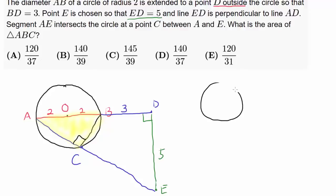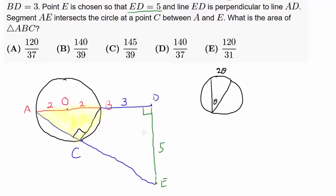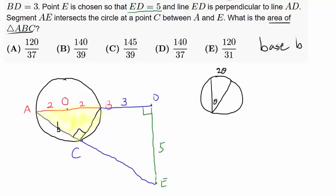Whenever you have an inscribed angle, the measure of the angle is one half the measure of the subtending arc. In our case, angle ACB subtends the semicircle, which is 180 degrees, so dividing by 2 gives us 90 degrees for angle ACB. The area of a triangle is one half base times height. Since we have a right triangle, if we know base AC, we can find height BC using the Pythagorean theorem, and then compute the area.